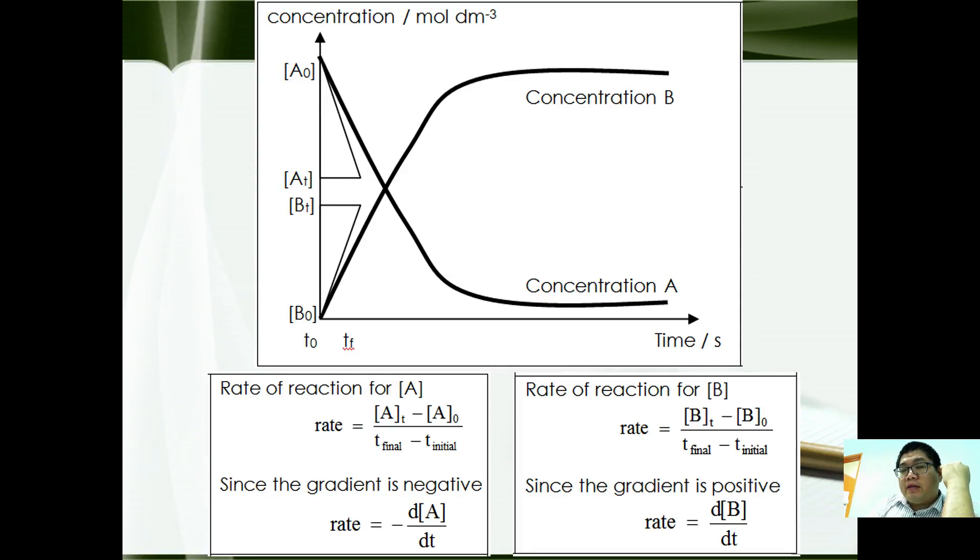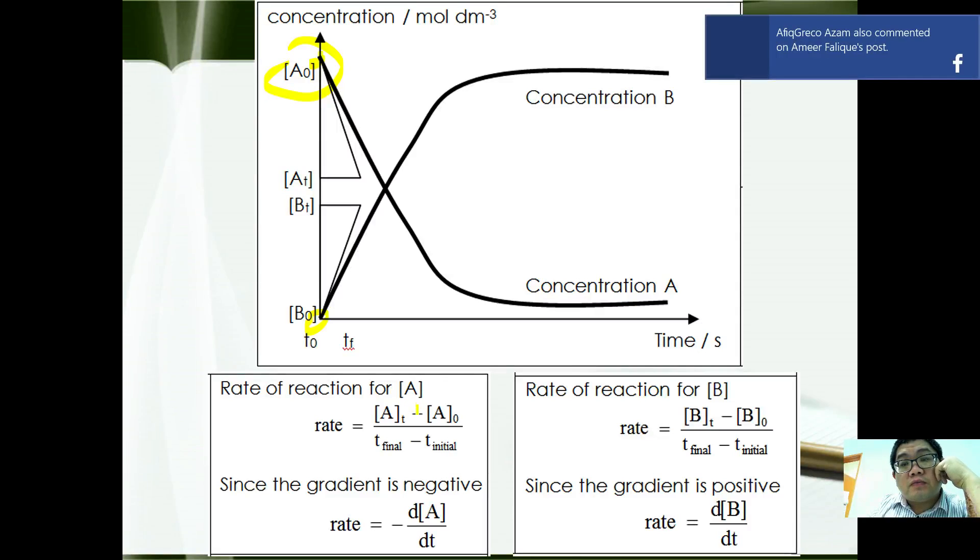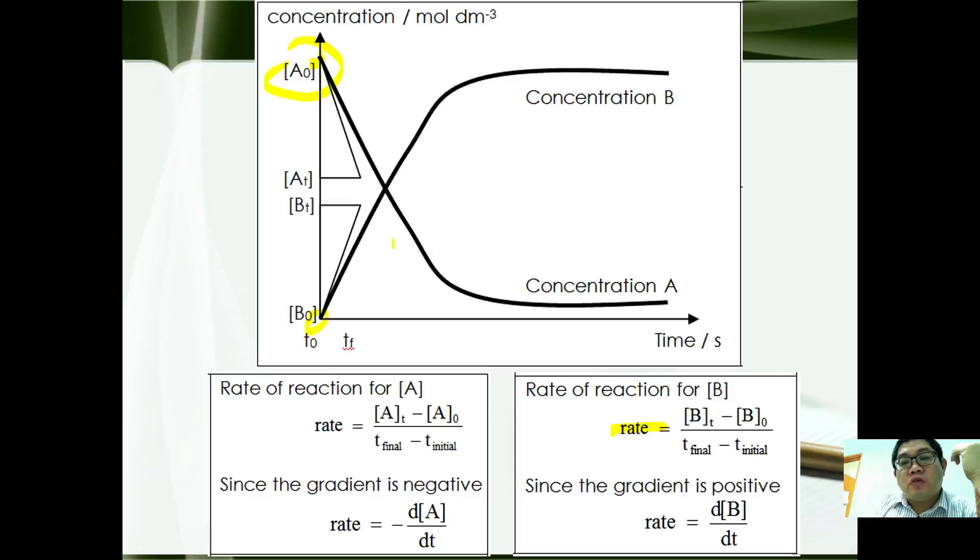From here, rate of reaction can be measured by using the tangent of the graph. If we were to measure the initial rate of reaction, we should take the tangent from the graph intercepting at time T equals zero. So this will be the initial rate for the concentration of A, where the rate of reaction can be expressed as the difference of the concentration over the difference of the time. Here you can find that the gradient is positive. Therefore, rate equals dB/dt. For A, the rate is negative, so therefore negative dA/dt.